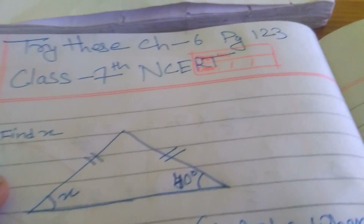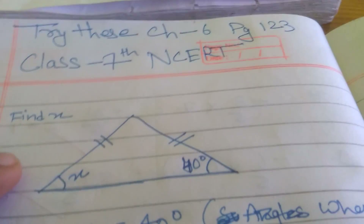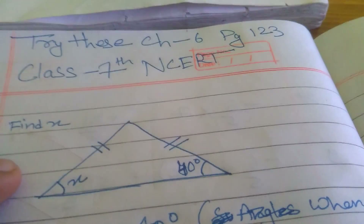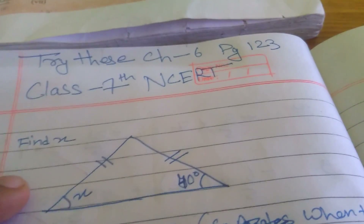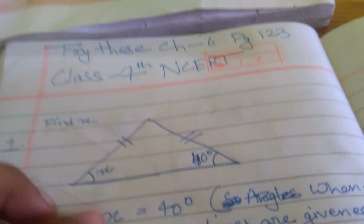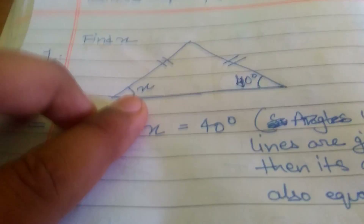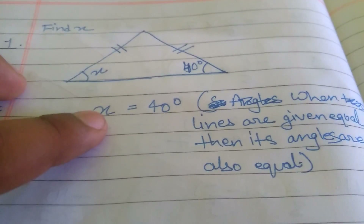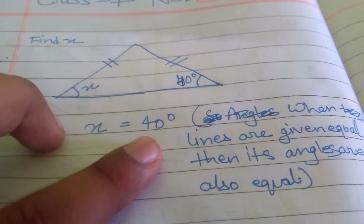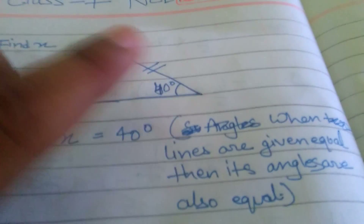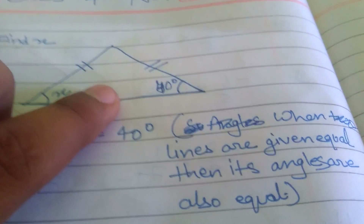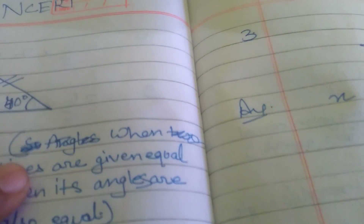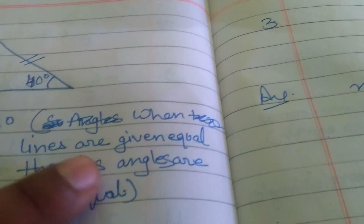Hello friends, today we are going to solve the answers of exercises of Chapter 6, page number 123 of Class 7 NCERT. This is the first figure — we have to find x in it. X is equal to 40, because here is 40 and the two sides are given equal. The reason is: when two sides are equal, their angles are also equal.